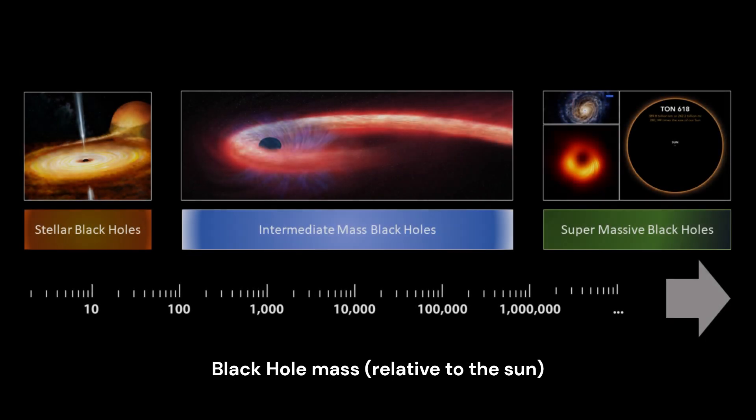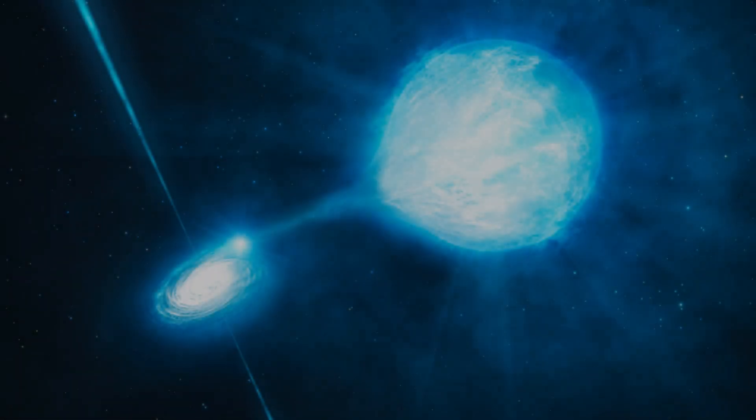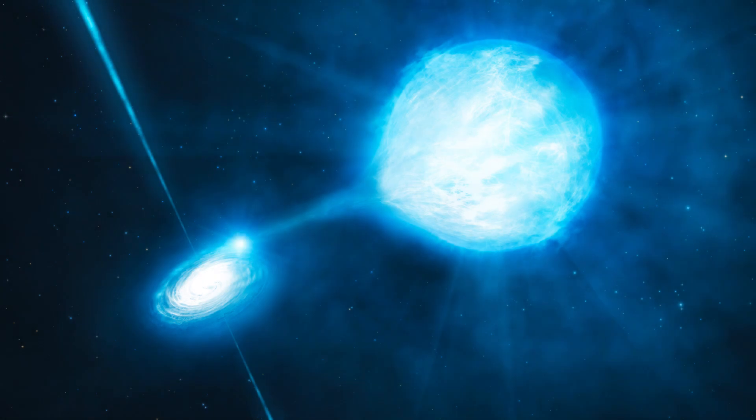Stellar mass black holes typically have a mass that ranges from approximately 3 to 20 times the solar masses. These black holes are formed from the remnants of massive stars. When a massive star exhausts its nuclear fuel, it can no longer counteract the force of gravity, leading to a gravitational collapse and the formation of a stellar mass black hole. Stellar mass black holes are often detected through their interaction with nearby stars or the X-rays emitted from their accretion disks when they capture matter from their surroundings.